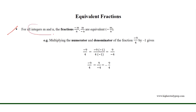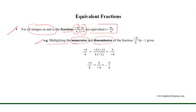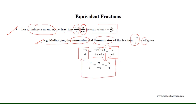For all integers m and n, the fractions minus m over n and m over minus n are equivalent to each other. For example, multiplying the numerator and denominator of the fraction minus 9 over 4 by minus 1 gives minus 9 over 4 is equal to 9 over minus 4. Because minus 9 times minus 1 equals 9, and 4 times minus 1 equals minus 4. So 9 over minus 4 is the equivalent fraction of minus 9 over 4.